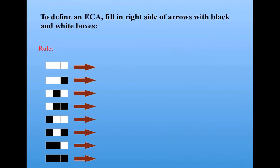As I said before, to define an elementary cellular automaton, or ECA, we have to list all the neighborhoods and fill in the right side of the arrows with black and white boxes to define the update state for the center cell at the next time step. We can notice that since each cell can be either black or white, there are two possibilities at each one of these positions.